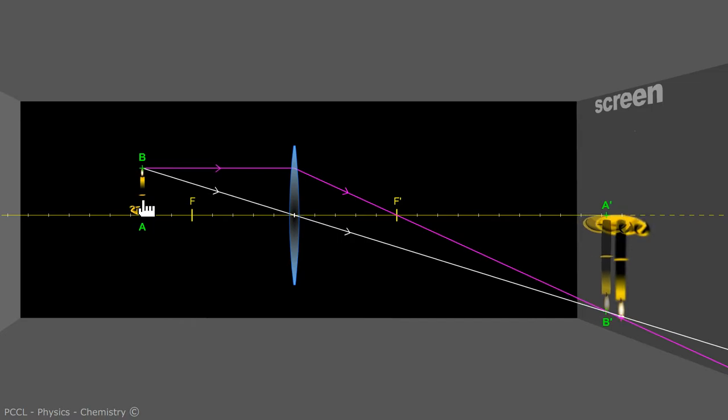To get the sharpness, I can move the object around, that is called focusing. Move the lens, possibly the screen. Or even, as is the case in our eye, make the curvature of the lens more or less convex. This is what the ciliary muscles in our eye do, we will see that in another video. They manage to modify this curvature.